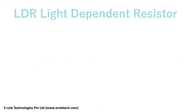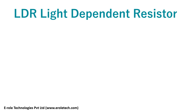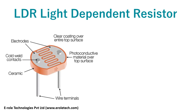LDR, a light-dependent resistor or photoresistor, is a component that is sensitive to light. The value of the resistance falls as the level of light falling on it increases.